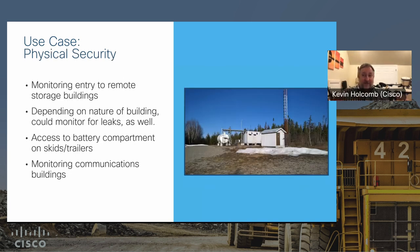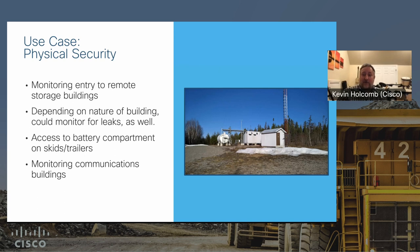Physical security is a good catch-all use case. Maybe you have an outbuilding or storage building for supplies — those kinds of buildings that may not have a security system, or a comms building where a door gets left open and animals or weather can come in. You can get notifications of door open/close events, occupancy, or access to battery compartments on skids or trailers. There are also tank sensors for LoRaWAN — you can monitor tank level remotely over quite long range.